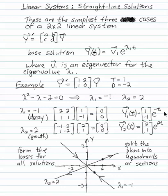And then here are my base solutions, 1 minus 1 e to the minus t, and 2, 1, e to the 2t.